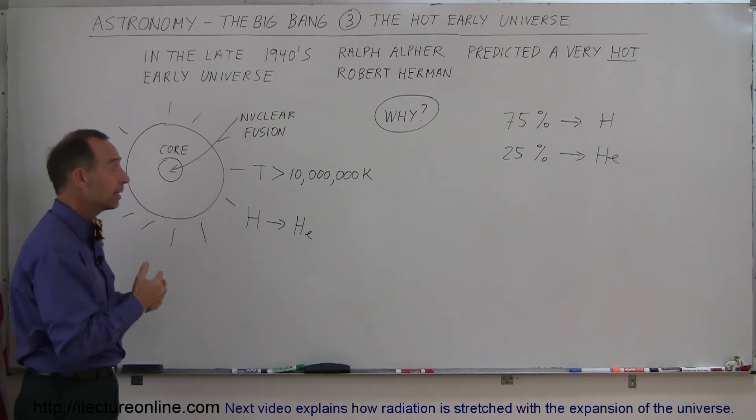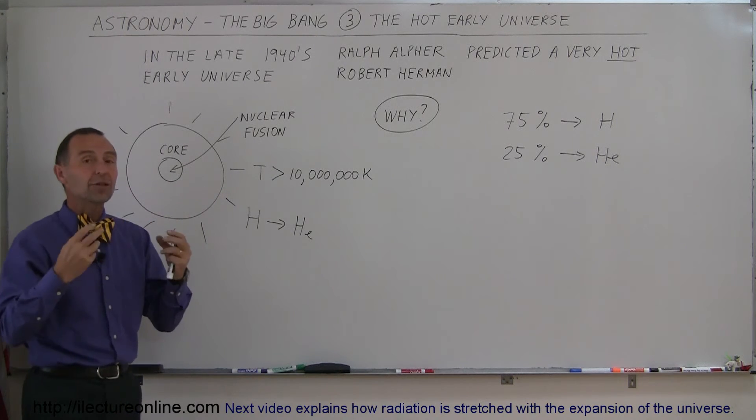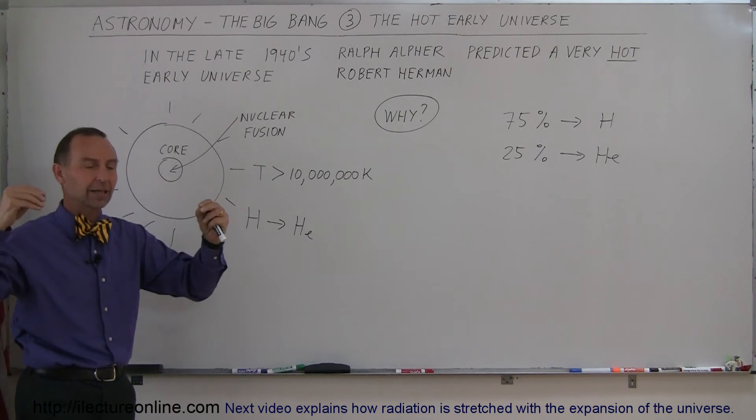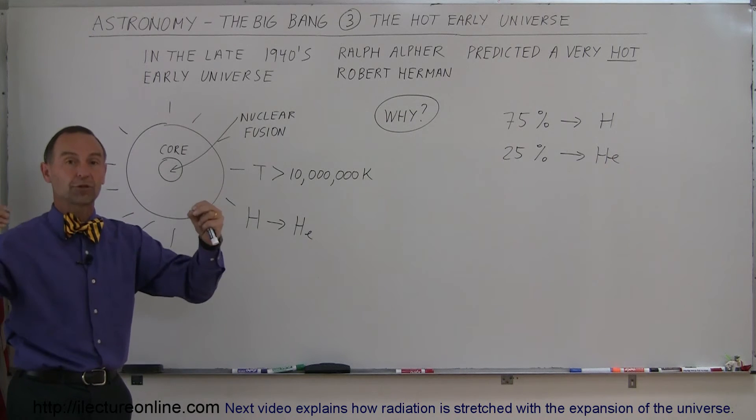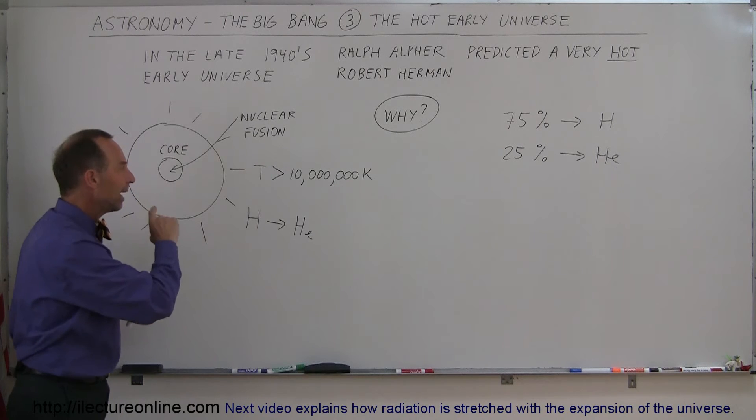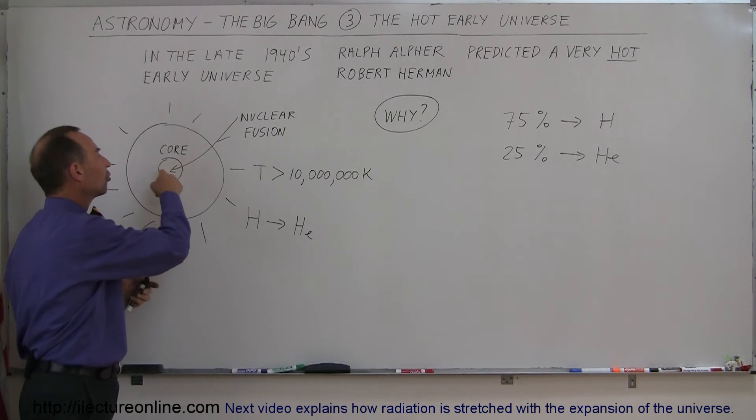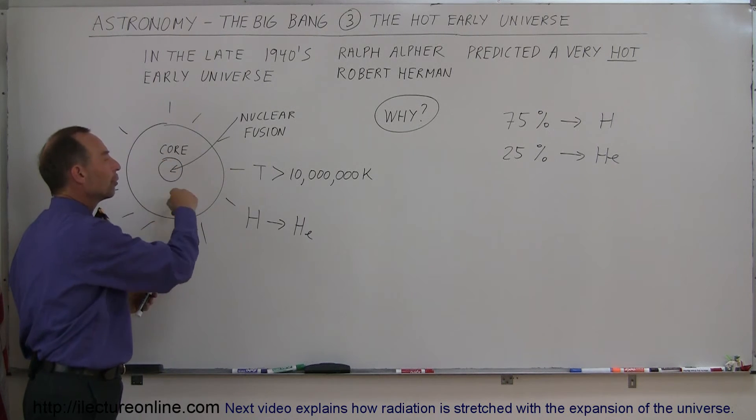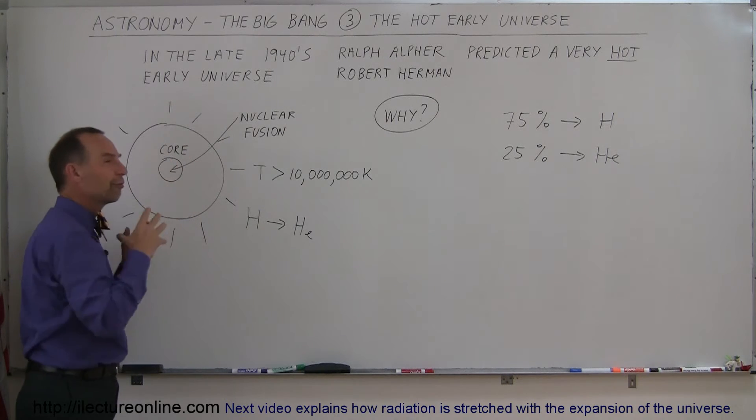Because you need four protons to make one helium nucleus, you need a temperature of at least 10 million degrees to make them move fast enough so they can collide before the repulsive forces push them away. They understood this was happening at the center of stars, and at the core, hydrogen is being converted to helium until the entire core fills up with helium.